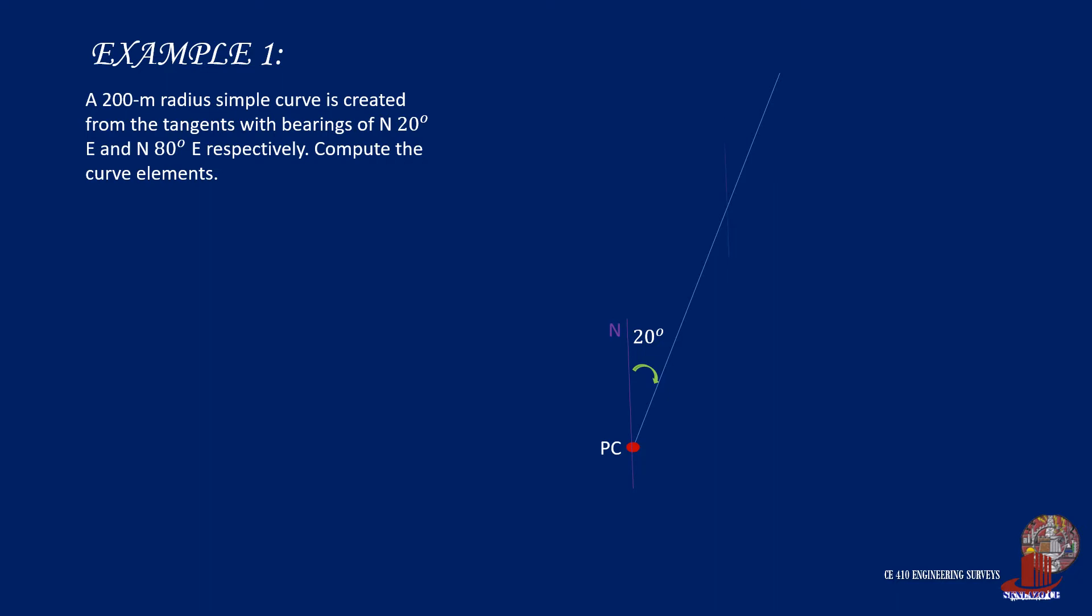It also says that the back tangent would have a bearing of north 80 degrees east. So from the point of intersection or vertex, we can proceed and draw the tangent line having the bearing. In this way, we are able to determine the angle of intersection which is 60 degrees.